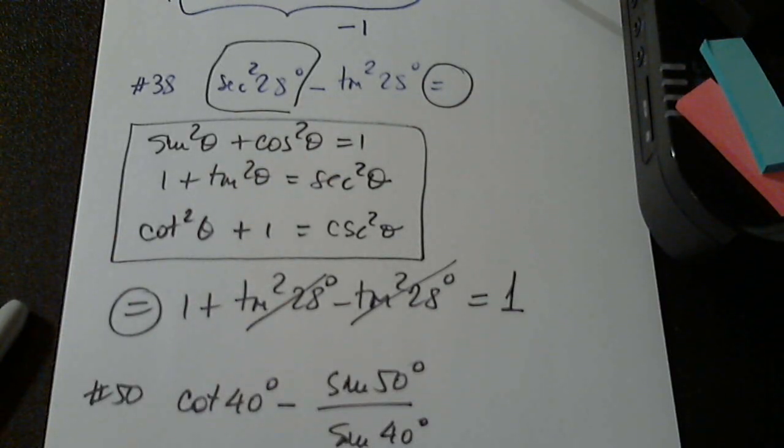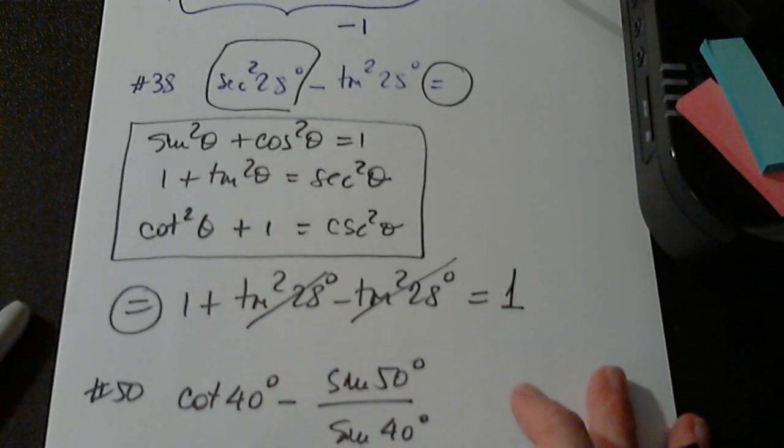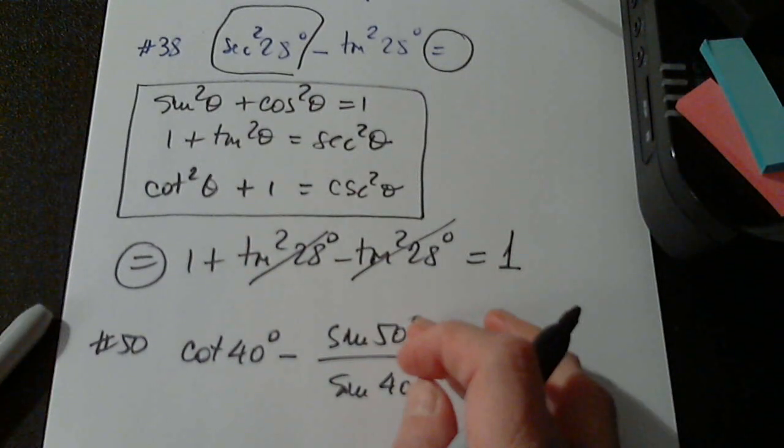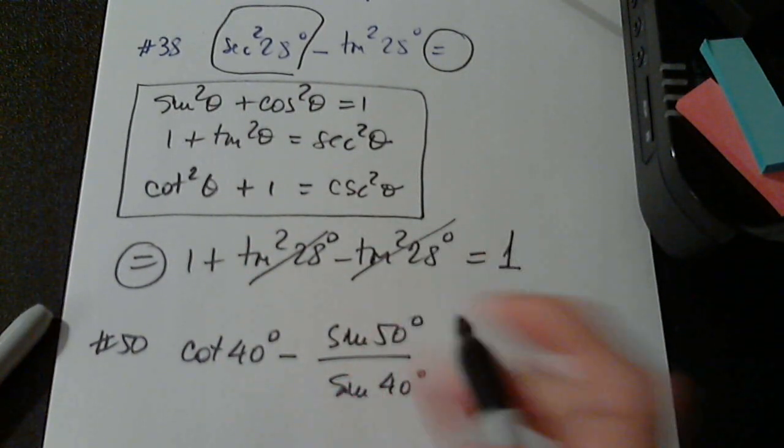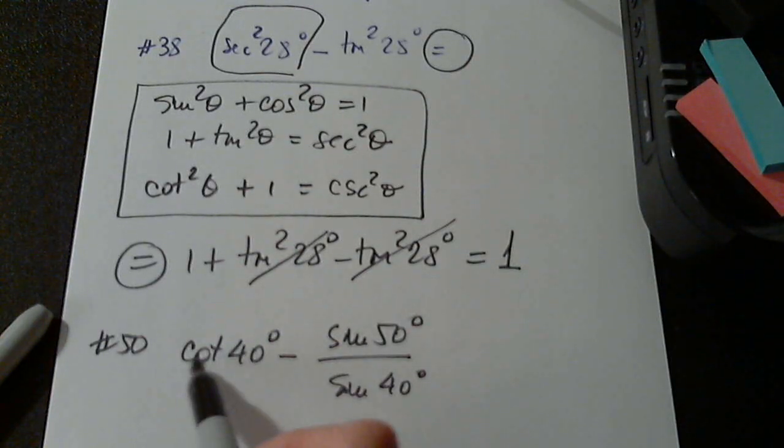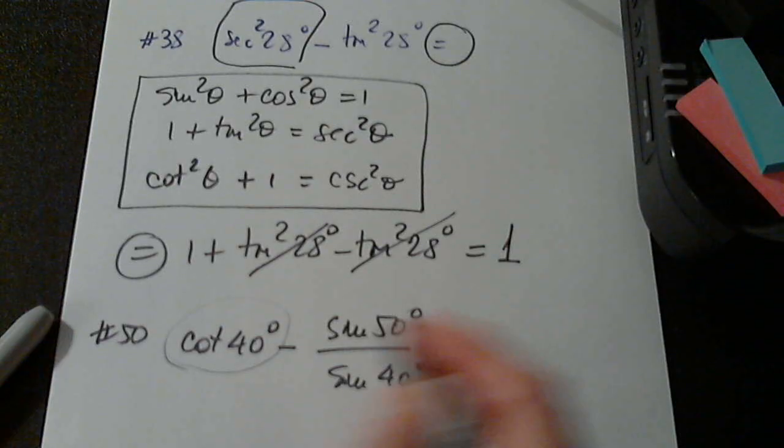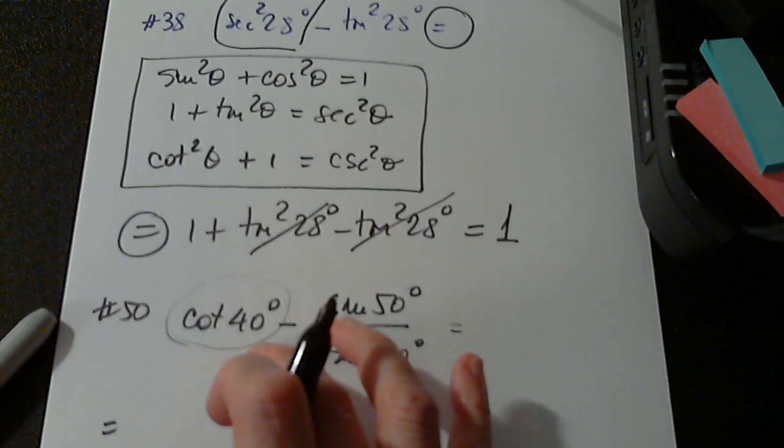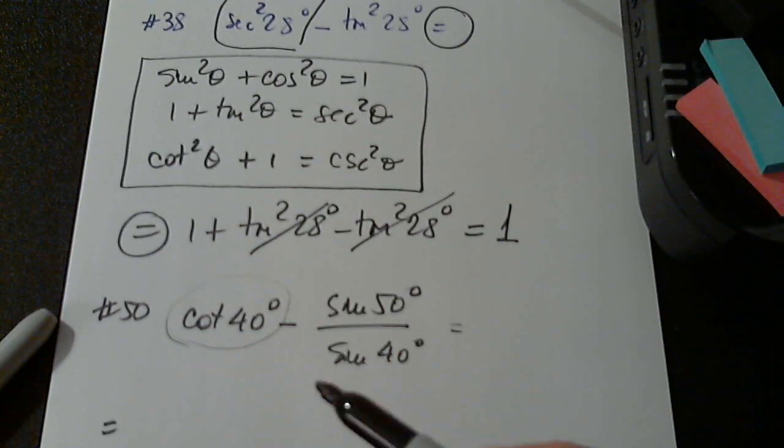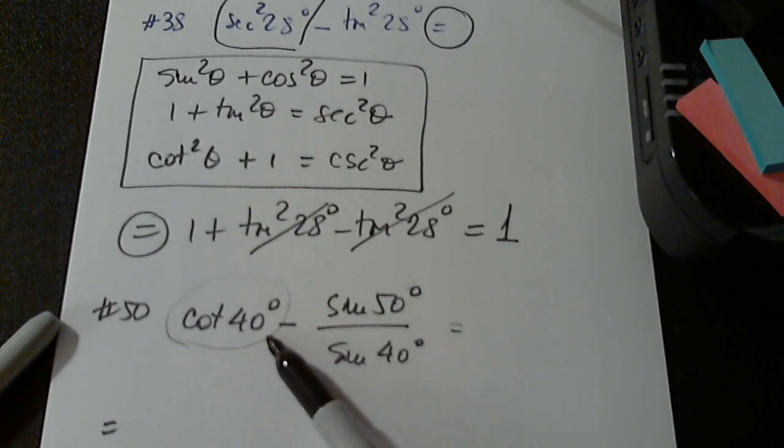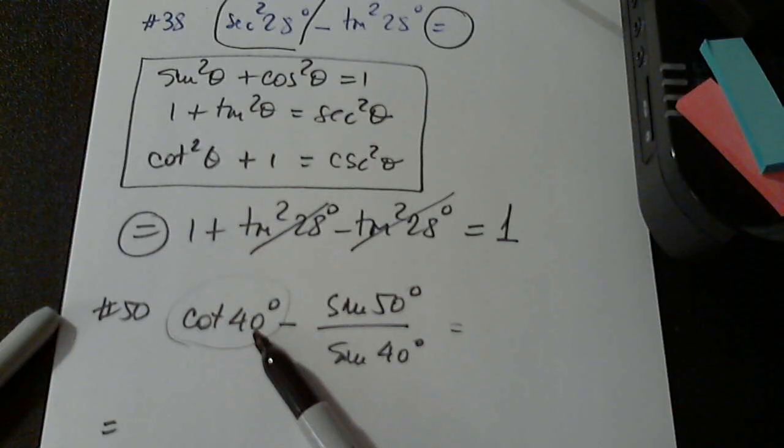Okay. Let's see what we can do here. For now, I'm just going to leave this alone, sine and sine. But I'm thinking of doing something else to cotangent. What can I replace cotangent 40 degrees by? What is the definition of cotangent?